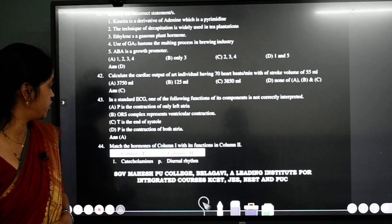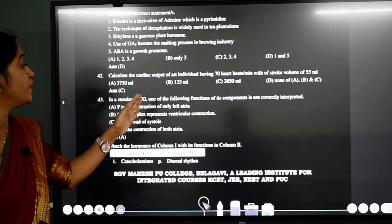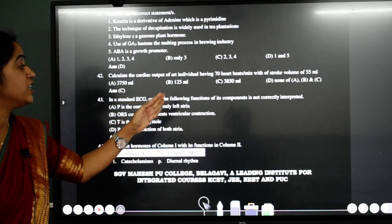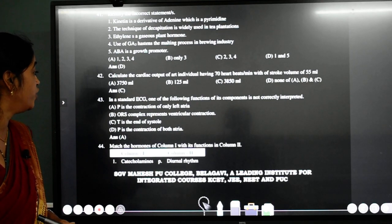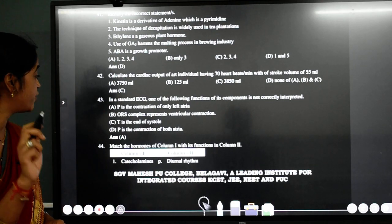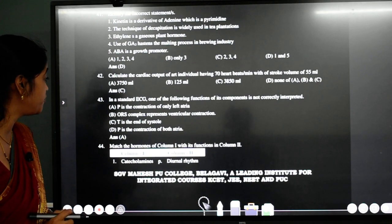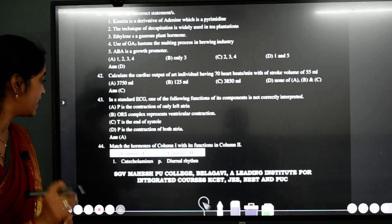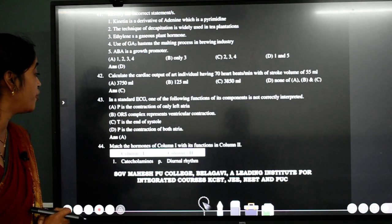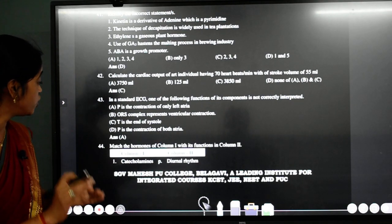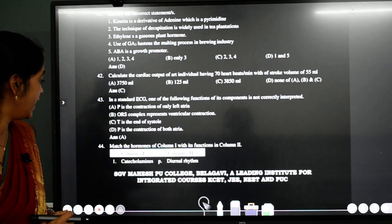43rd question. In a standard ECG, one of the following functions of its component is not correctly interpreted. P is the contraction of only left atria. No student. It is wrong statement. QRS complex represents ventricular contraction. That is correct. T is the end of systole. Is correct. And P is the contraction of both atria. That is also correct. A is wrong. And the answer is A.